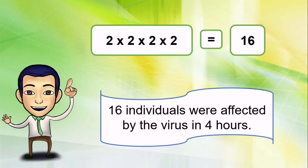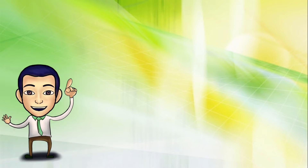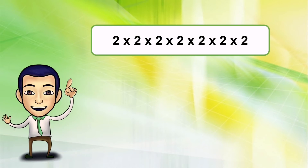Therefore, 16 individuals were affected by the virus in four hours. To answer the second question, we need to do the same procedure — multiply the two individuals seven times. So it's two times two times two times two times two times two times two. It's too long, right? To write it easily or to make it short and simple, the exponential notation will help us.